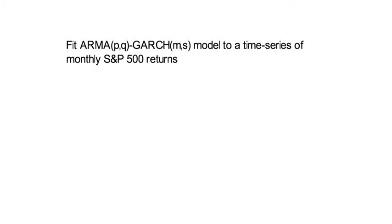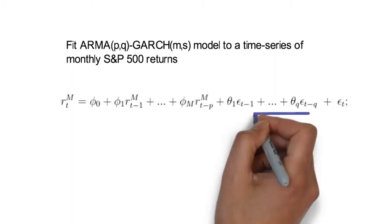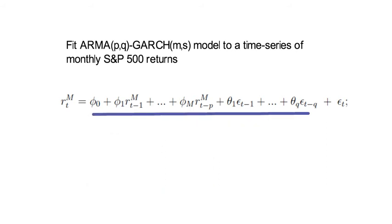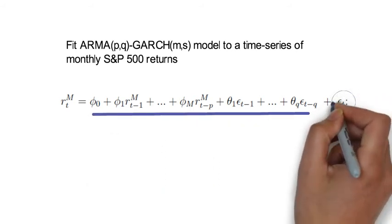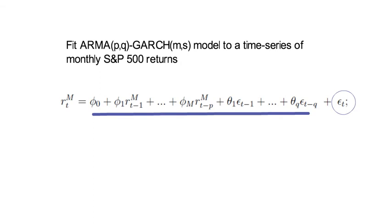So the resulting parametric model for monthly S&P 500 returns reads as follows. The realized return has that ARMA(p,q) structure plus return innovation epsilon t. And here, right away, I assume that epsilon t follows a Gaussian distribution with mean 0 and variance sigma square t minus 1.